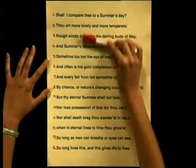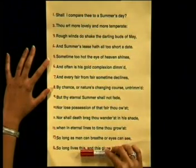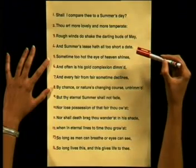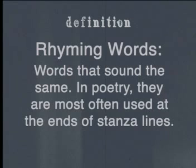Sonnets have to be written in one single stanza — that means in one paragraph. Also the subject matter in sonnets are usually elevated, or about the important things in life. This poem deals with love and the admiration of physical beauty. Now let's talk about rhyme. Can you remember the definition of rhyme from our previous lesson? Rhyming words are words that sound the same.